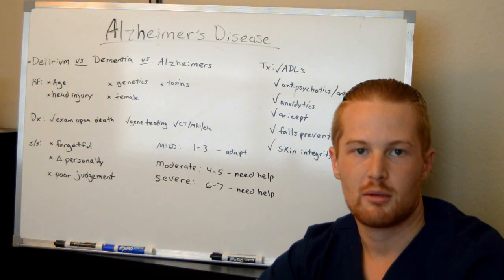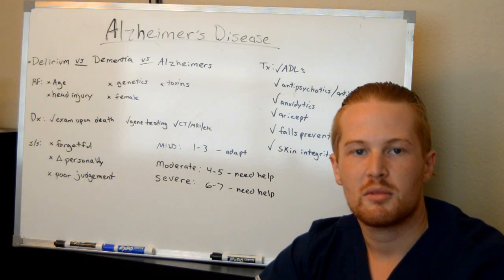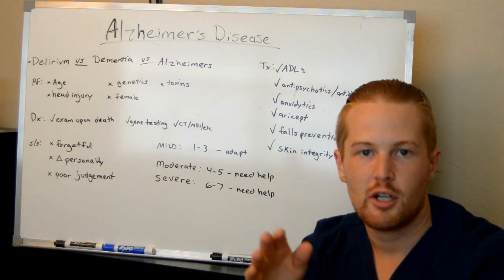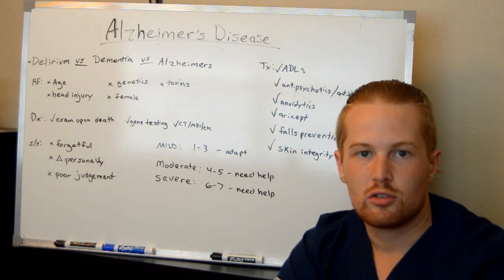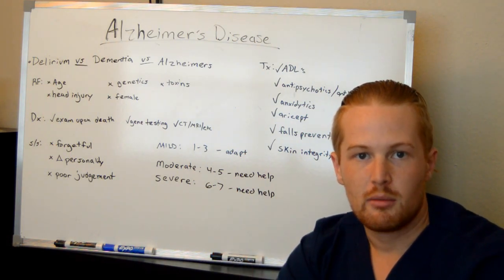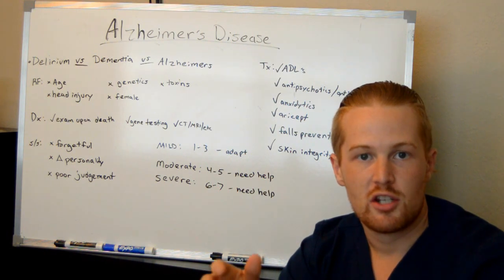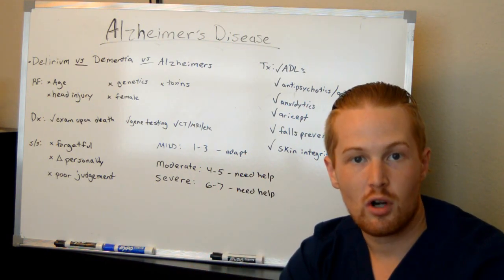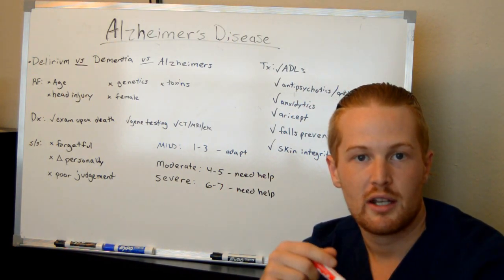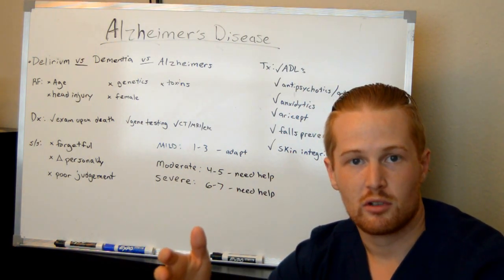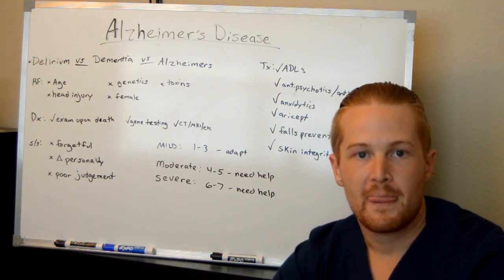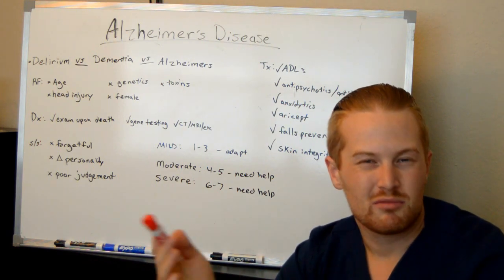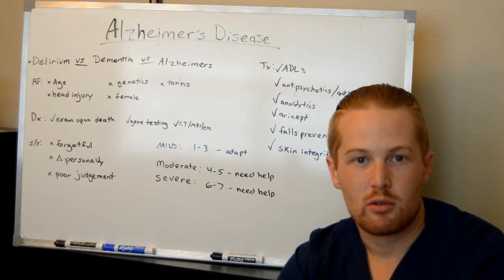In this video we're going to talk about Alzheimer's disease. Alzheimer's disease is a type of dementia, and I want to talk about the difference between delirium, dementia, and Alzheimer's. Delirium is acute — a sudden change in mental status that is reversible. Dementia is chronic, meaning a long-term change in mental status that's not necessarily reversible. Alzheimer's is a type of dementia, making up around 60% of dementia cases.